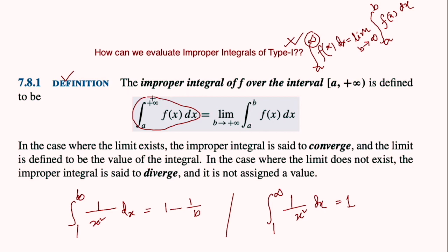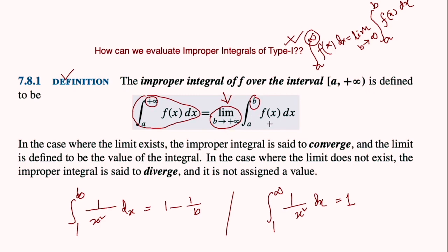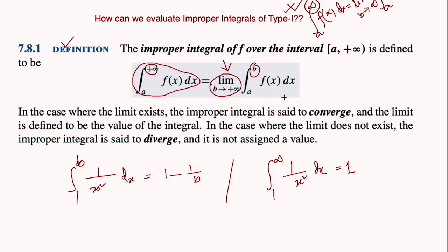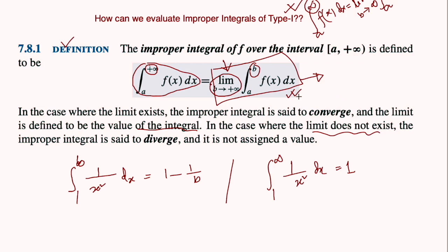What you need to do is replace the upper limit infinity by a very large finite number b, where b approximates infinity. This approximation is mathematically defined by taking the limit of the integration. If this limit exists, then the improper integral is said to converge to a particular value, and that limit value is the value of this integral. However, if this limit does not exist, then we say the integral diverges and in that case the integral has no value.